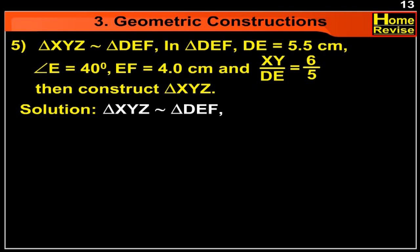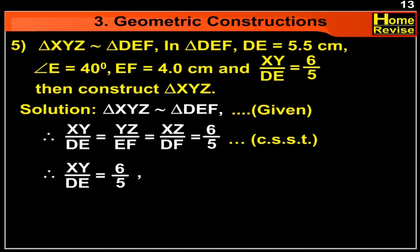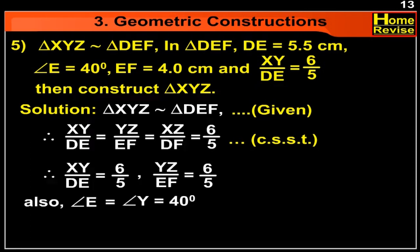Triangle XYZ is similar to triangle DEF. Therefore, XY upon DE is equal to YZ upon EF is equal to XZ upon DF, which equals 6 upon 5. Therefore, XY upon DE is equal to 6 upon 5, and YZ upon EF is equal to 6 upon 5. Also, angle E is equal to angle Y, which equals 40 degrees.